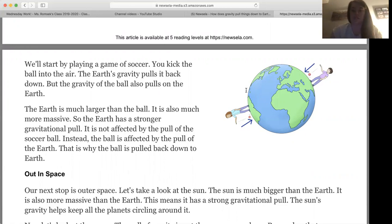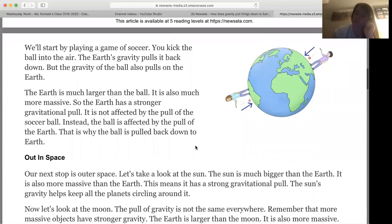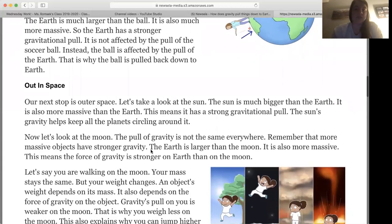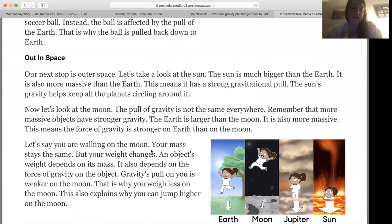So because the ball is bigger, that's why it's the one falling towards Earth. And then if you look over here on the side, this should look very familiar to you from what we did during our solar systems and when we talked about gravity back a ways. Out in space, our next stop is outer space. Let's take a look at the sun. The sun is much bigger than the Earth, which you should also know. It is also more massive than the Earth. This means it has a strong gravitational pull. The sun's gravity helps keep all the planets circling around it.